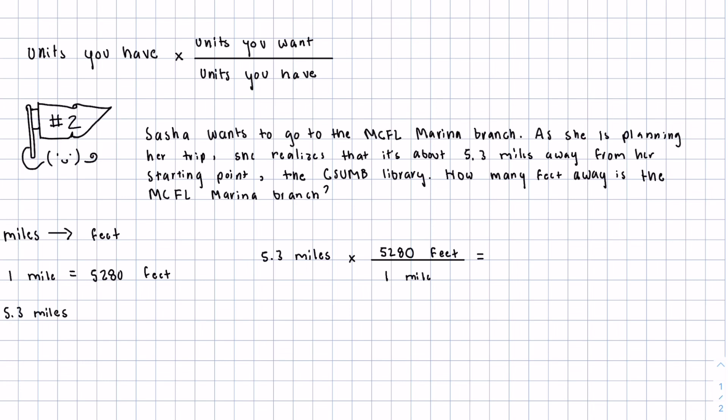And this is how it's going to be set up. So now all we have to do is just multiply across. But remember to always cancel out your units. So 5.3 times 5,280 feet. That is going to come out to 27,984 feet.